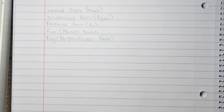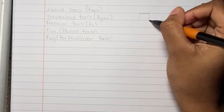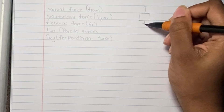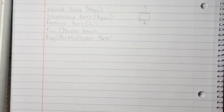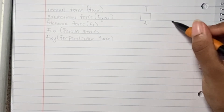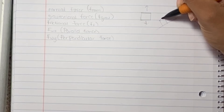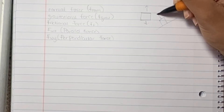Now that we are moving into inclined planes, the normal force is going to be different from before. When the object was just sitting on a table it stood straight up and gravity pointed straight down. Now on an inclined plane, the normal force is always perpendicular to the surface — so if the surface is tilted this way, the normal force goes this way.